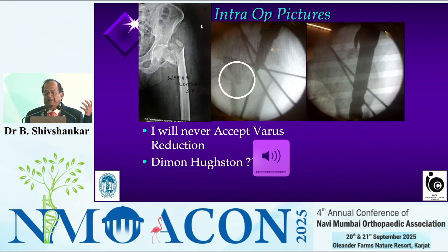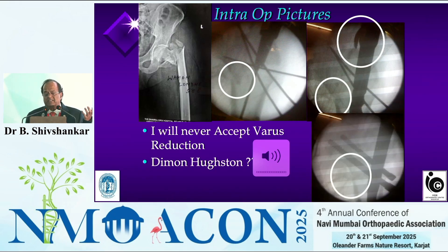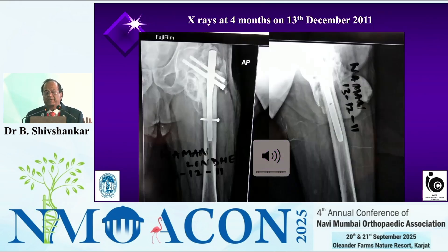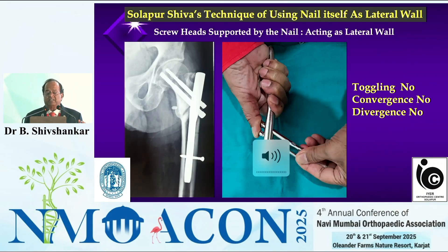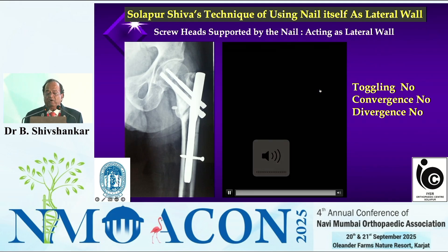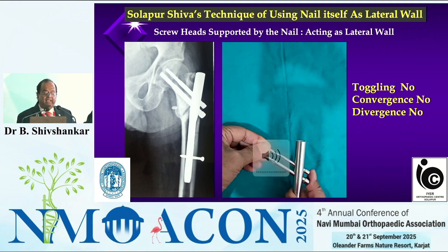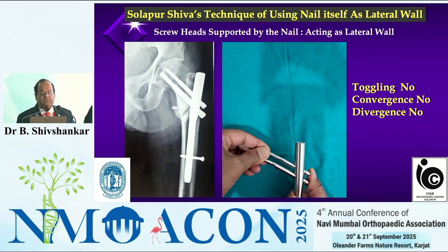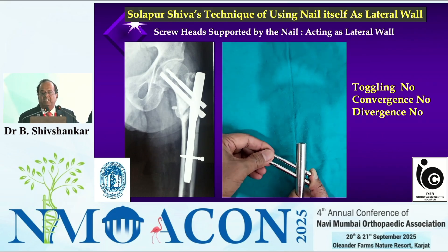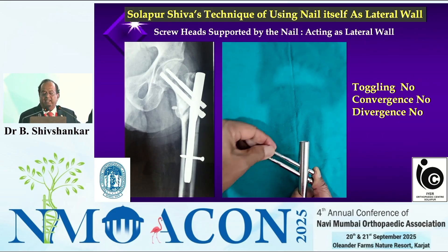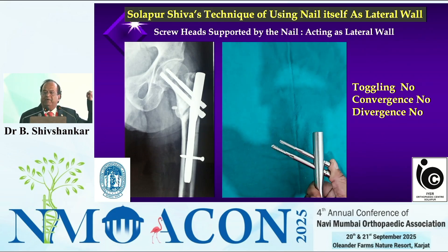Comminuted lateral wall — here a badly comminuted lateral wall: I just aligned them and it healed without any problem because the neck-shaft angle was good and the osteoPeriosteal sleeve was intact. I am using the nail itself as the lateral wall — the screw head is touching the nail. If the screw head is touching the nail, the screw cannot diverge or converge.